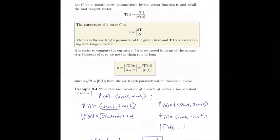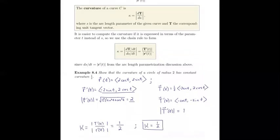The first example asks us to show that the curvature of a circle of radius 2 has constant curvature of one half. Okay, so to start this we parametrize a circle of radius 2: 2 cosine of t, 2 sine of t. We want it parametrized in two dimensions because we need the vector form of it in order to calculate the curvature.